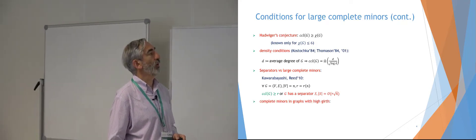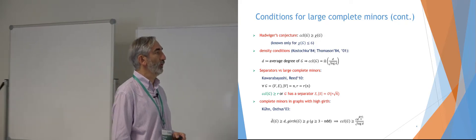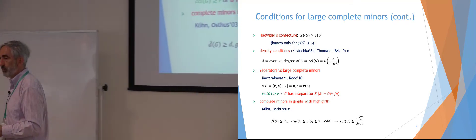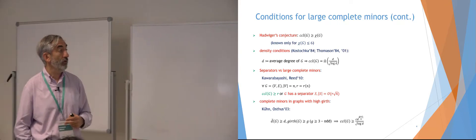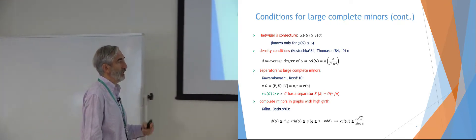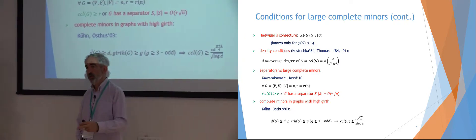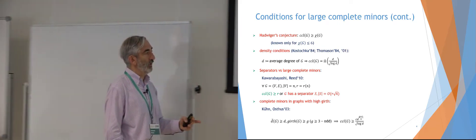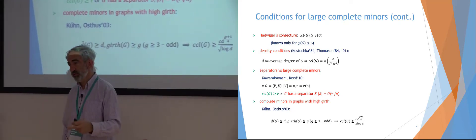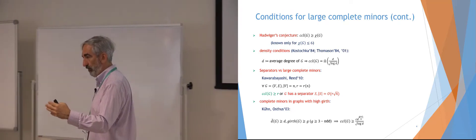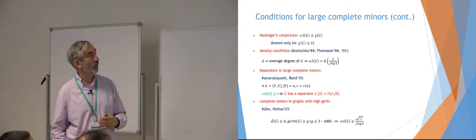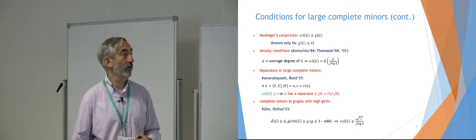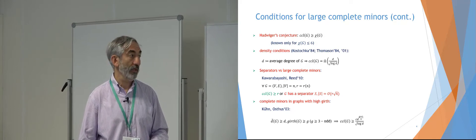There are also results about complete minors in graphs with high girth. If the average degree of your graph is at least D but you additionally assume no short cycles — that is, the girth of your graph is large — then you can get a complete minor whose size is larger than D; it's D to some power depending on the girth. The standard proof strategy is to first find a minor with large average degree, then apply Kostochka-Thomason since the notion of minor is transitive, to trade a dense minor for a complete minor of nearly the same degree.